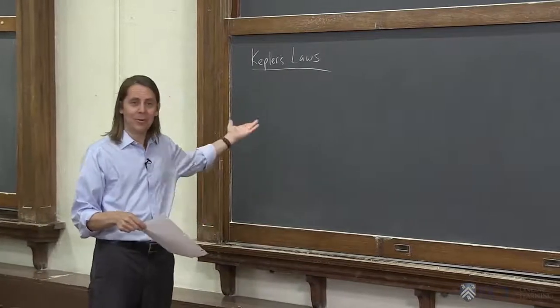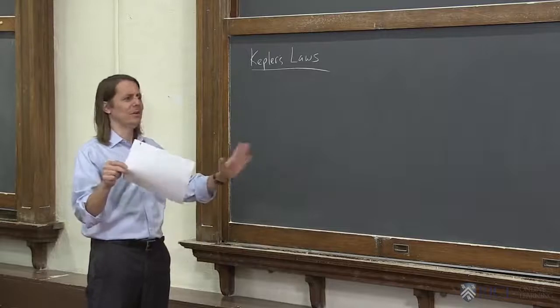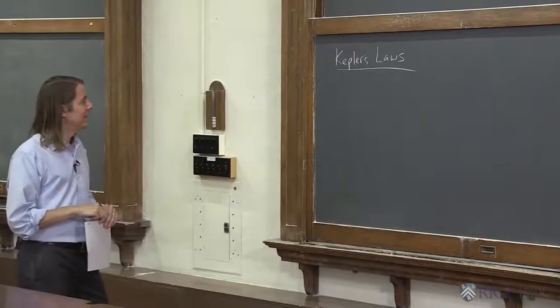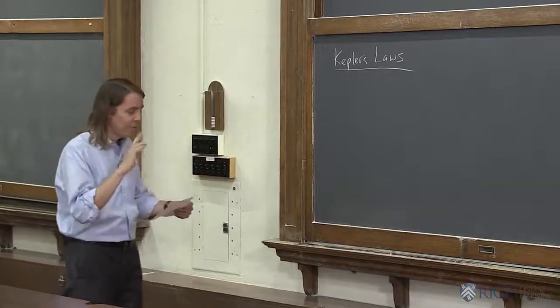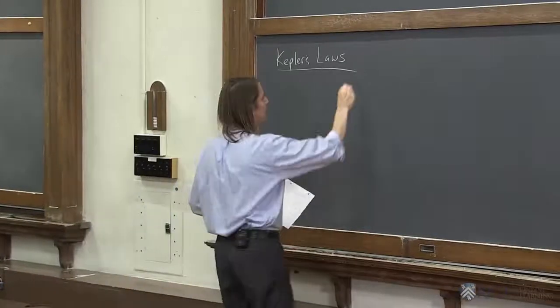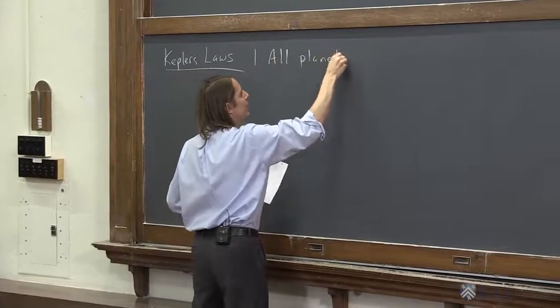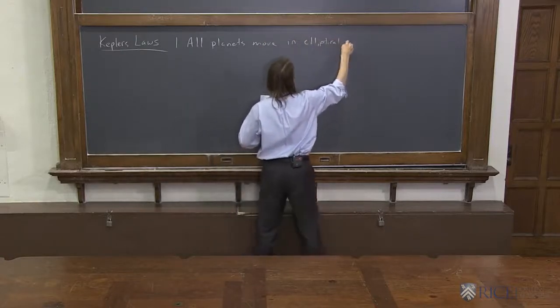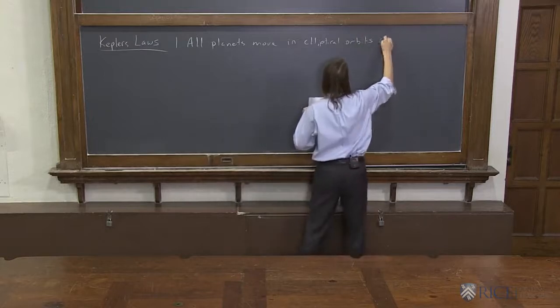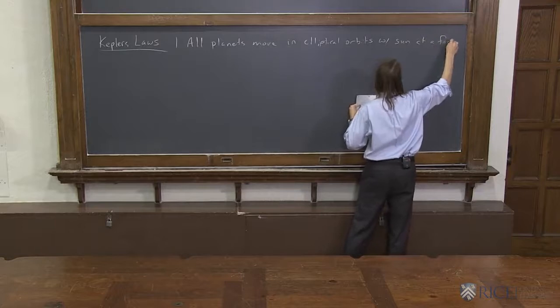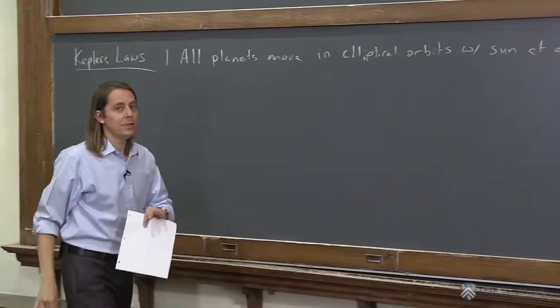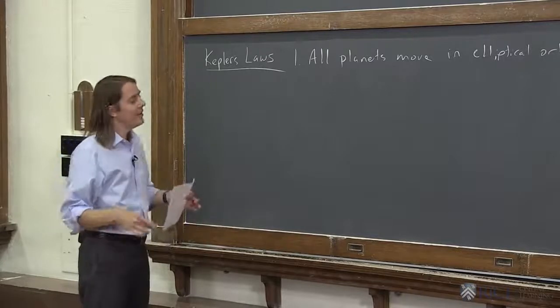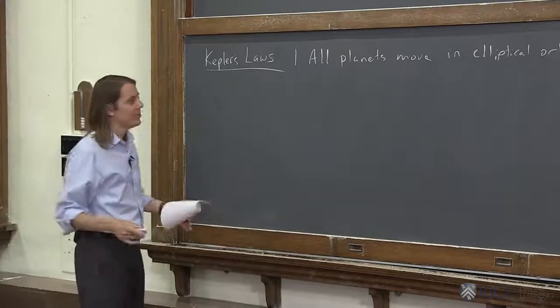Then what happened is, Kepler visited Tycho, saw all this debauchery and said, oh my god, just give me the data and let me leave. So Kepler got the data, he was a good physicist, he didn't want to party and he figured out how to explain how the planets move and he came up with these three laws of planetary motion. Let's look at law one: all planets move in elliptical orbits with the sun at a focus of the ellipse. This really upset people, everybody wanted the planets to be moving in circles because the heavens were perfect. But Kepler couldn't, there was no way around it. The data clearly said it moves in an ellipse.